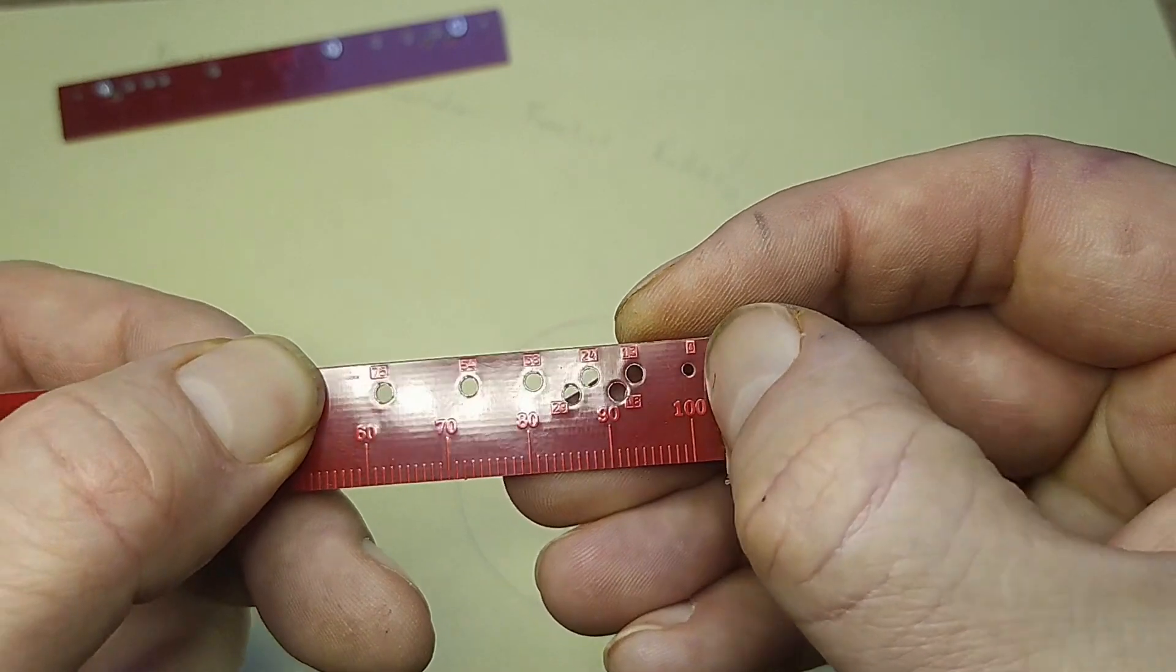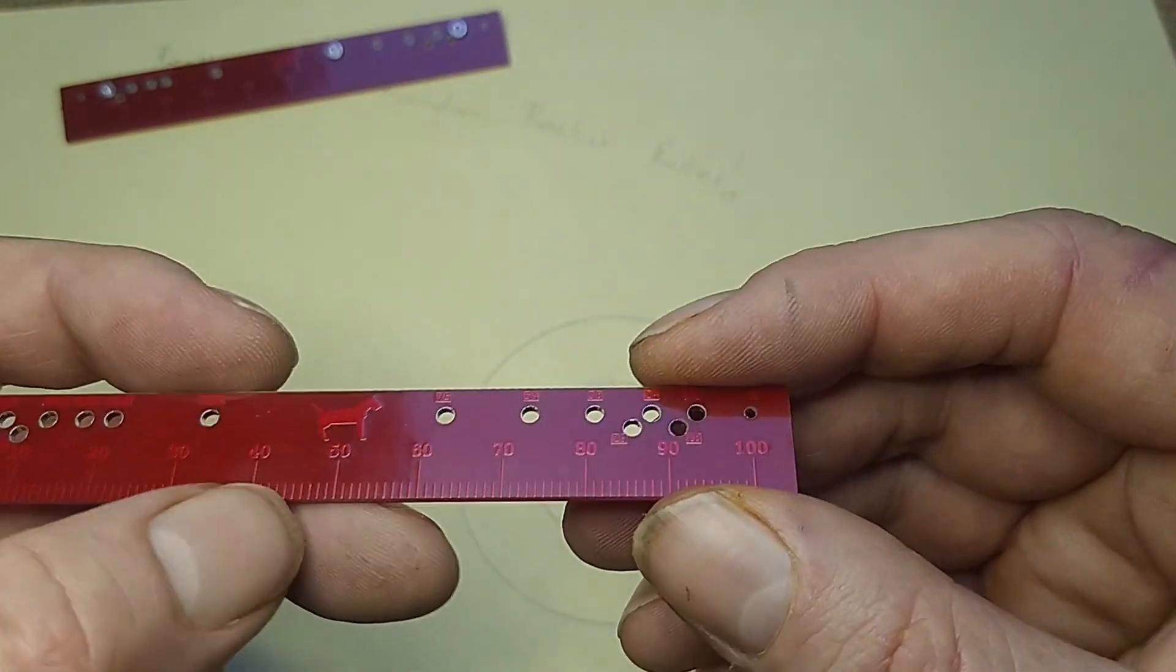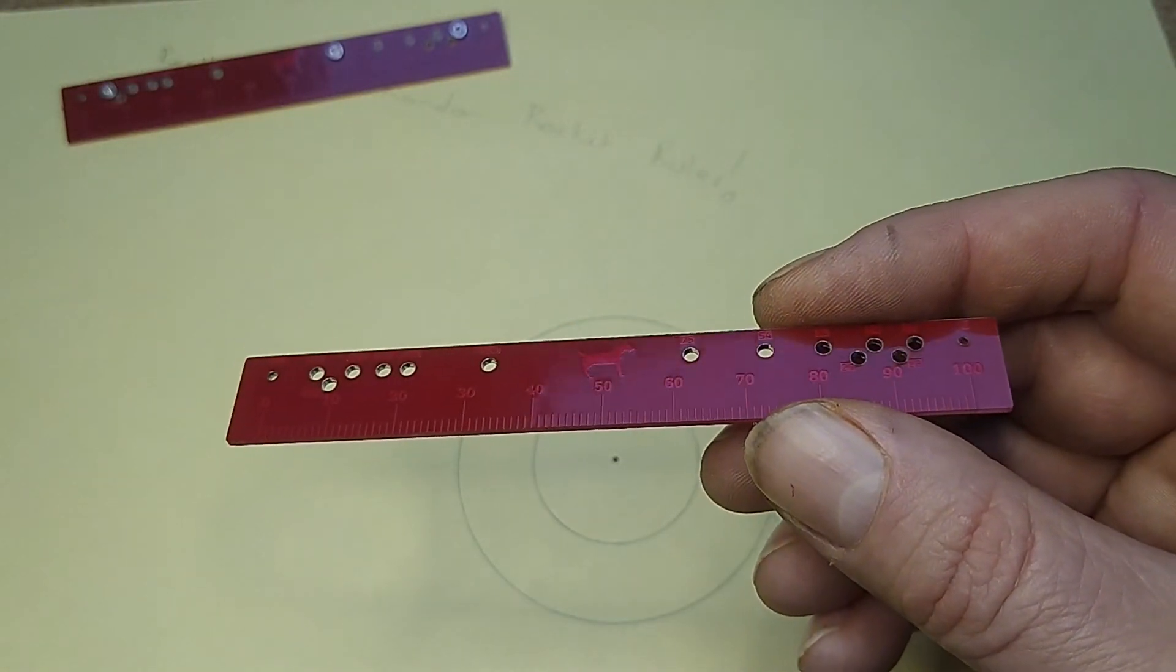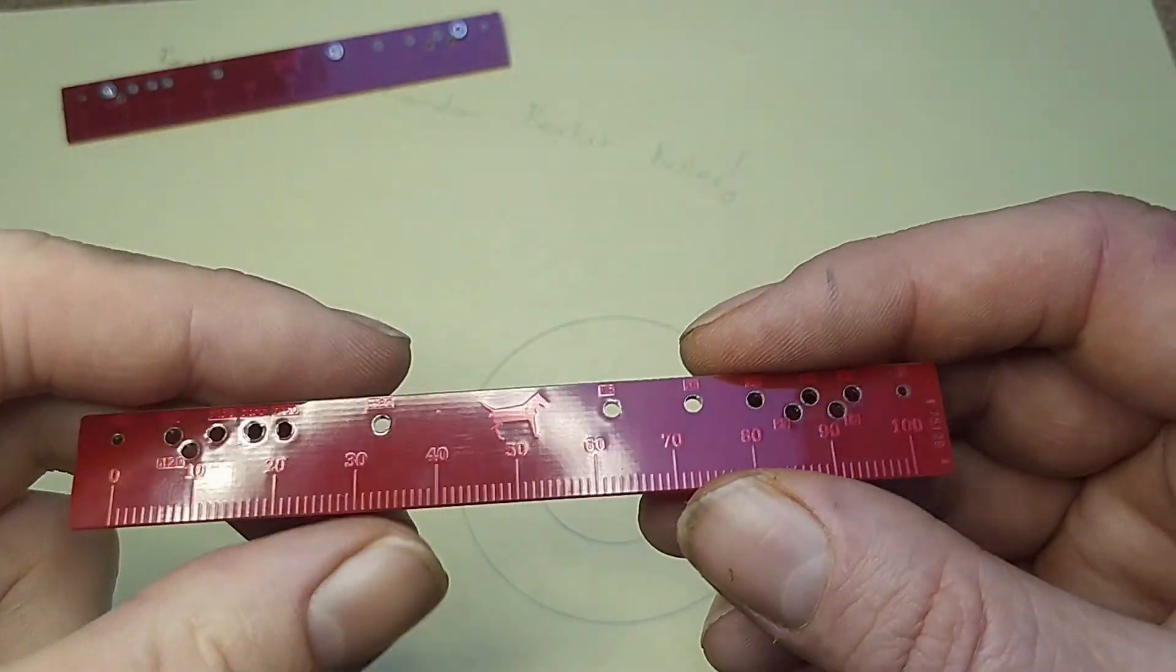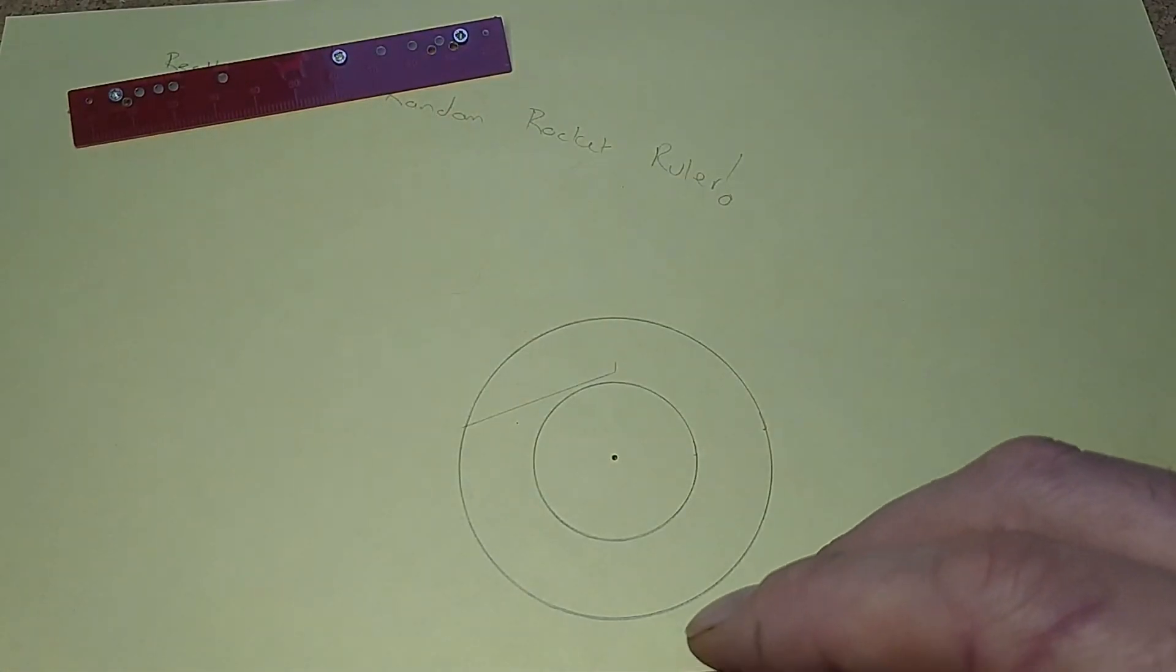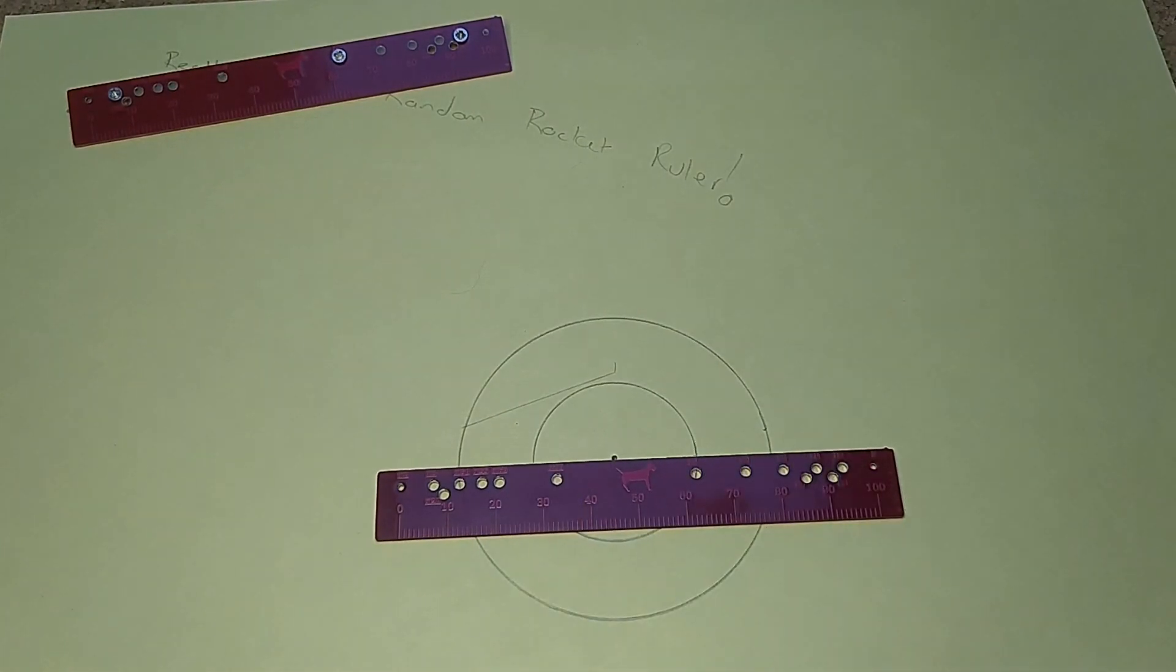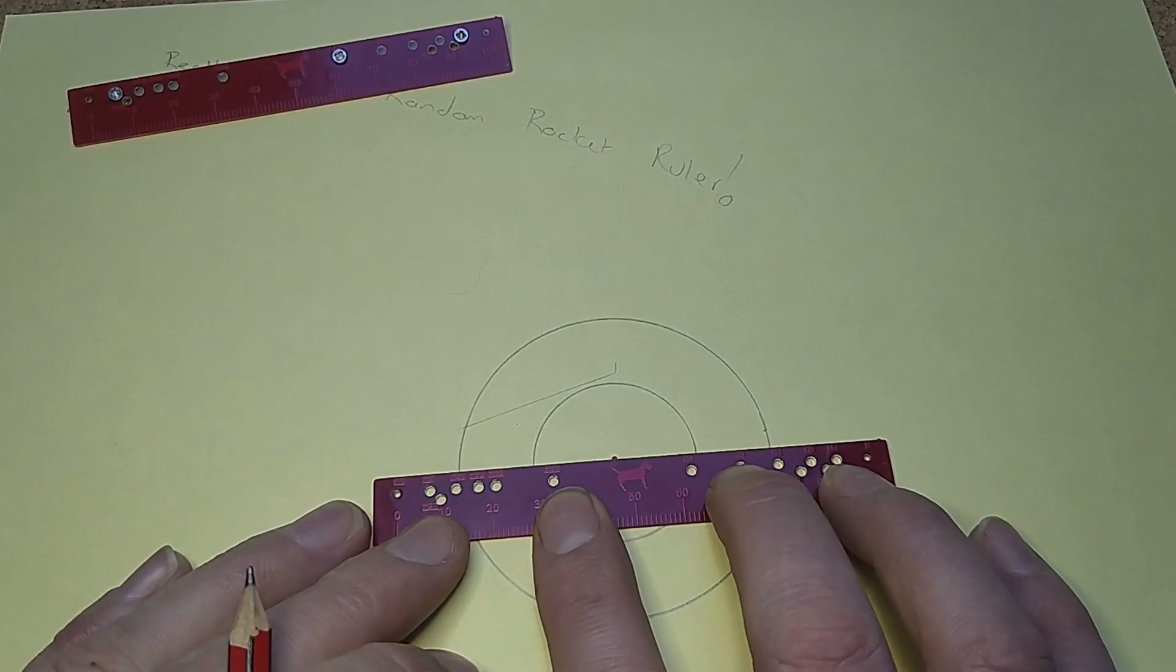On the other side, we've got another zero hole, and then we've just got common rocketry diameters. So we've got 13 millimeters, 18 millimeters, 24, 29, 38, 54, and 75 millimeters. Again, if you're building a 54 millimeter motor mount rocket, don't use this to make your centering rings out of a piece of cardboard, because that's going to end really badly.